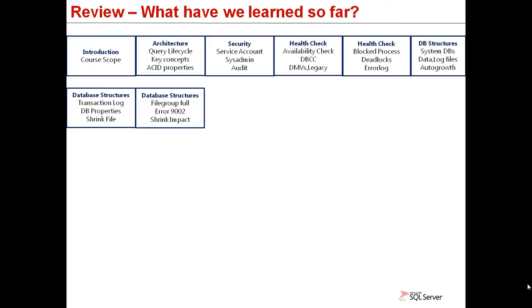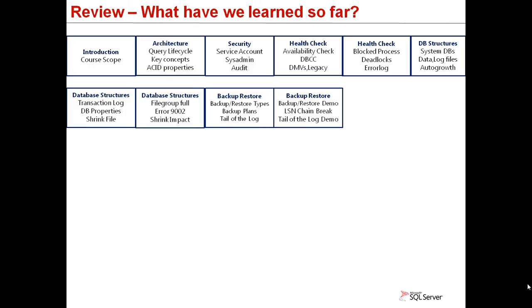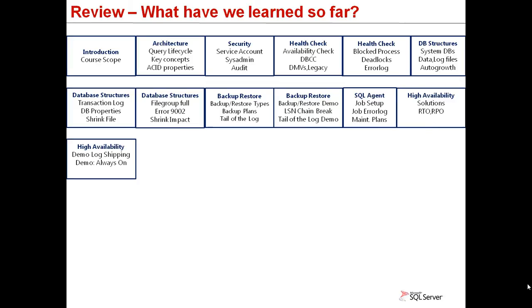The system databases and database data and log files were covered in module 4. We also studied the autogrowth settings, transaction log internal structure, and shrink file commands. In that demo, we saw errors happening live, such as the filegroup full error and error 9002. On module 5, we covered backup and restore concepts from full backup to tail-of-the-log backup, and which one was applicable for each scenario. On the SQL Agent module, it was shown how to create and configure a job manually, browse job history, and the difference of using the maintenance plan. In high availability, there were definitions of recovery point objective versus recovery time objective and a presentation of each available solution. In the demo, we viewed log shipping and Always On configuration and some common problems related to them. Finally, in the last module — performance — some general guidelines on performance troubleshooting, and the tools and methodology available to build a baseline of performance data.